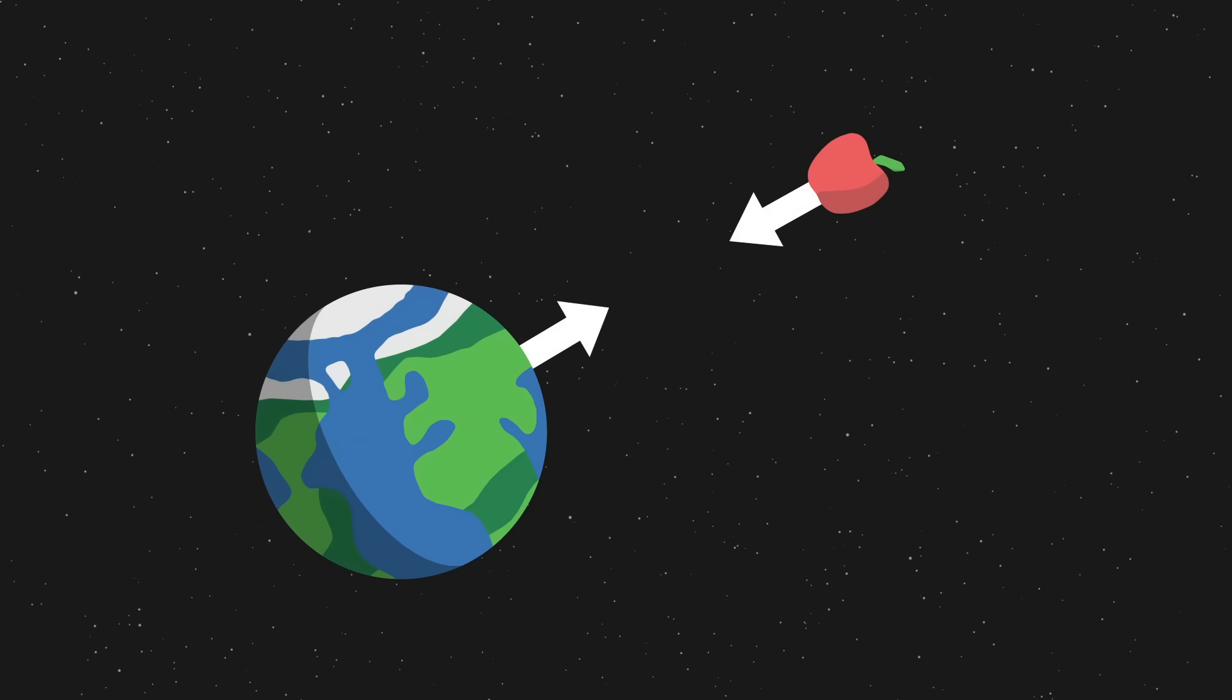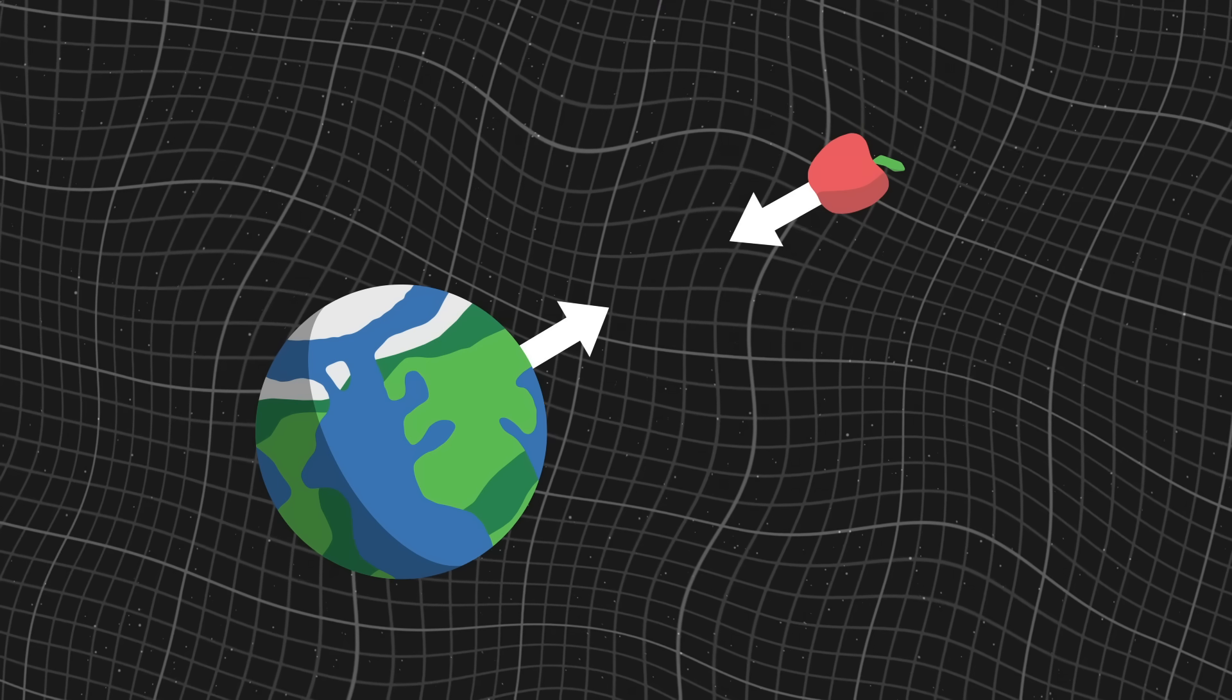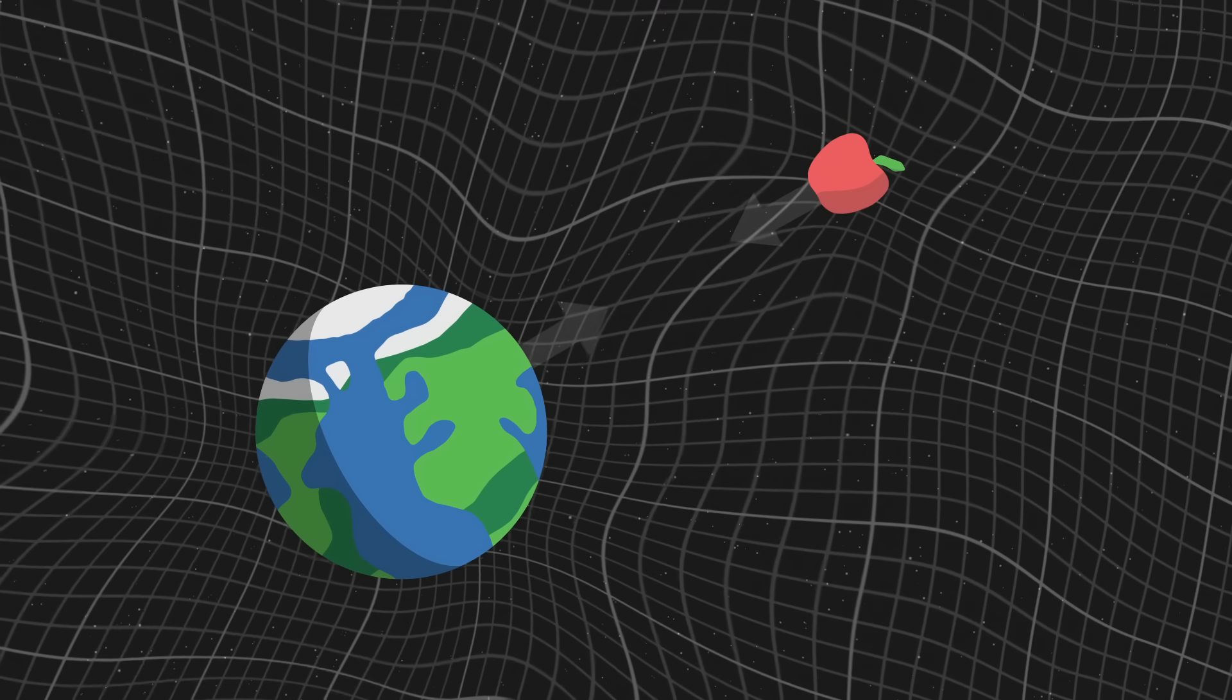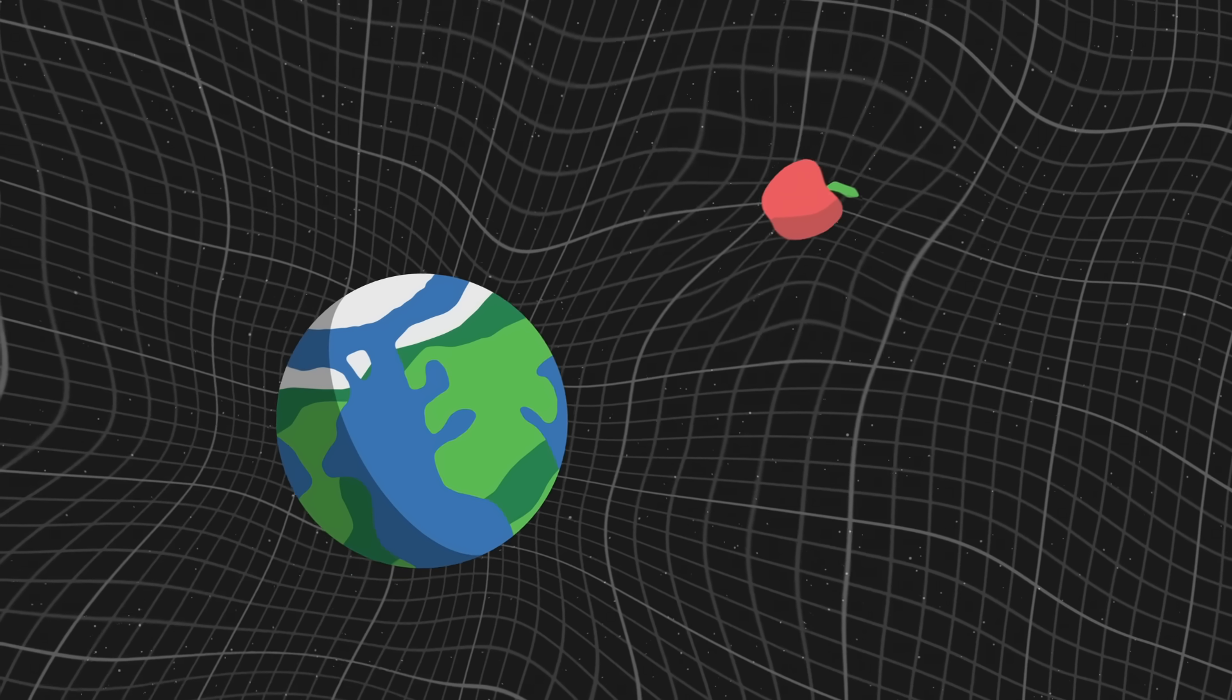On a large scale, we know that gravity is described by general relativity. Objects curve spacetime, thus attracting other objects.